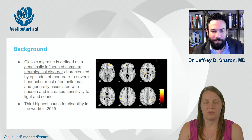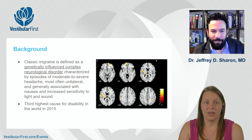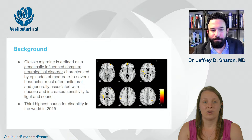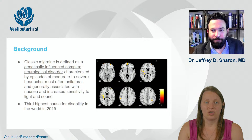Now we're going to talk more specifically about migraine. I always like to start with classic migraine, which has been defined as a genetically influenced complex neurological disorder. The typical migraine people think of involves episodes of moderate to severe headache, most often unilateral, often associated with nausea, and sensitivity to light and or sound. It is the third highest cause of disability in the world. Anything you want to add on what migraine is in a general sense before we go to the vestibular version?